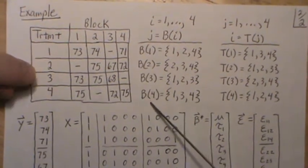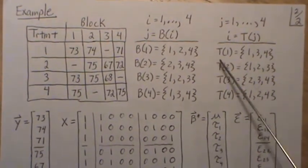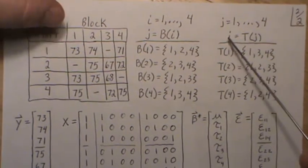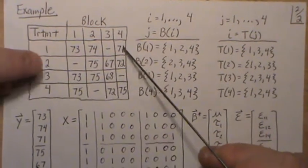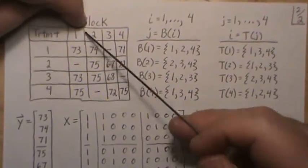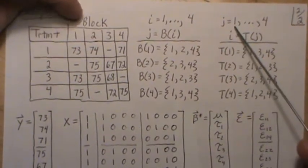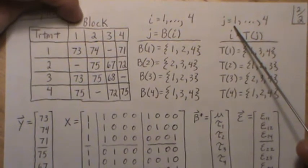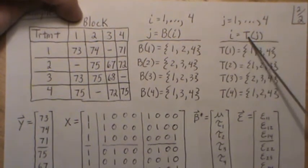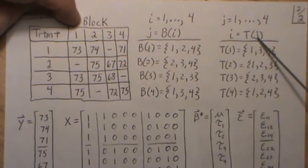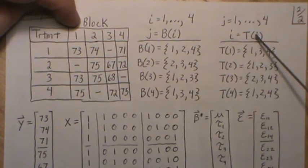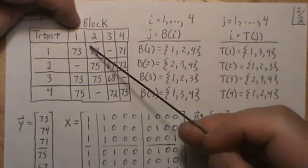This is the other notation where instead of thinking about it like this, we think about it like this. J equals one, so when we're in block one, i equals T(j), so it's the treatment assignments in block one (since j was one in this example): one, three, four.